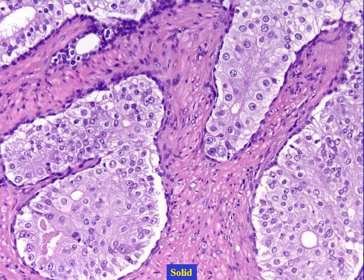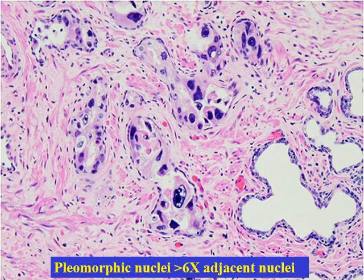Infrequently, intraductal carcinoma can also present with solid architecture. When you have predominantly solid architecture, you should also rule out urothelial carcinoma and spread of high-grade urothelial carcinoma from the differential diagnosis. The last criteria is markedly atypical nuclei in which nuclei are six times larger than adjacent nuclei, as shown in this particular example. This is one of the least frequent presentations of intraductal carcinoma.